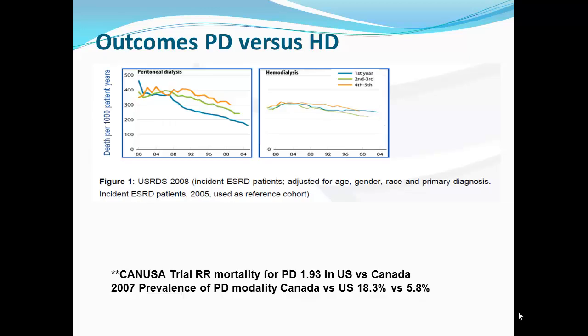This is a graph from the USRDS from 2008 showing incident dialysis patients over time. The rate of mortality is about the same for hemodialysis over time, but with peritoneal dialysis, survival is better in the first couple of years and gets worse as time goes on.